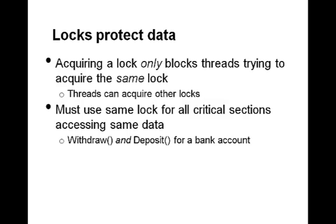One important thing to note is that acquiring a lock only blocks other threads trying to acquire the same lock. So if one thread acquires lock L, it doesn't stop another thread from acquiring lock M and vice versa. It will stop threads that want to acquire lock L, though. This means we can have different threads in different critical sections at the same time. The question then comes up: is it safe to have different locks protecting different critical sections?